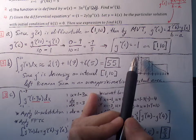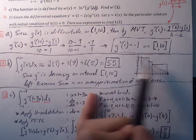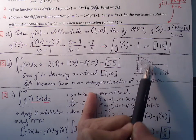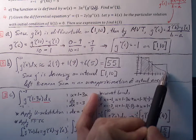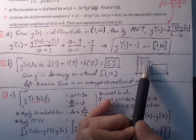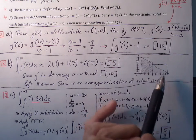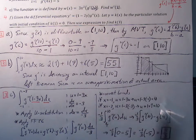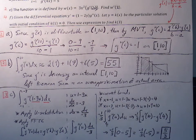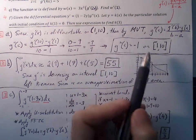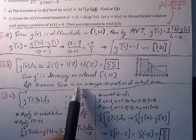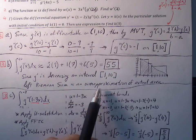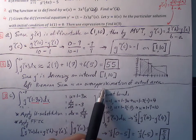We know that this graph is going to be decreasing. Because it's decreasing and we're creating left Riemann sums, these approximations will actually be an over-approximation. The area of these three rectangles is going to be more than the actual area under the curve. So our approximation of fifty-five will be an over-approximation of the actual area.